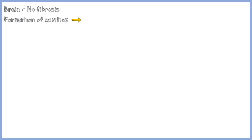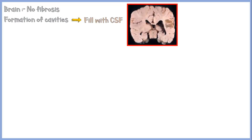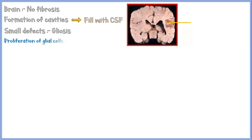These cavities later get filled with cerebrospinal fluid. Smaller defects will be repaired by a process called gliosis, in which the glial cells proliferate and get deposited in the damaged areas. They also produce small amounts of fibrillar proteins to fill the gaps.